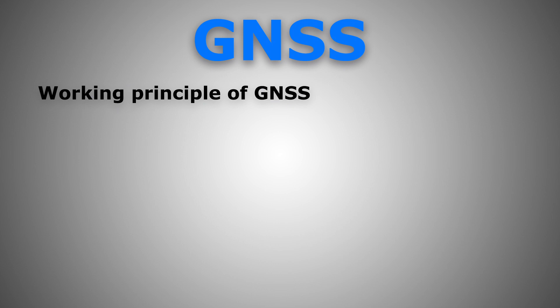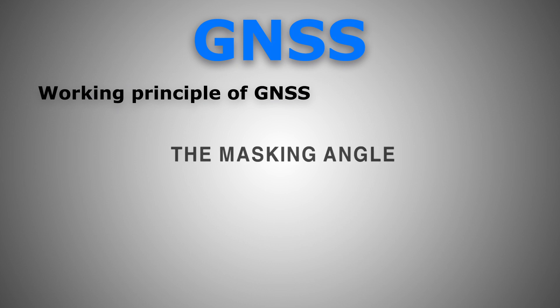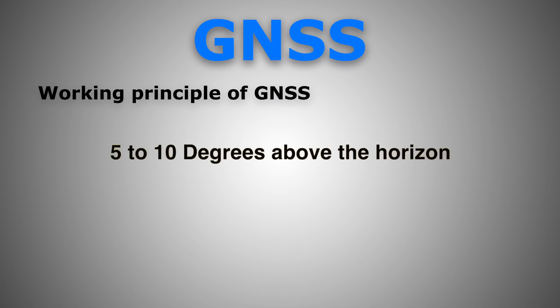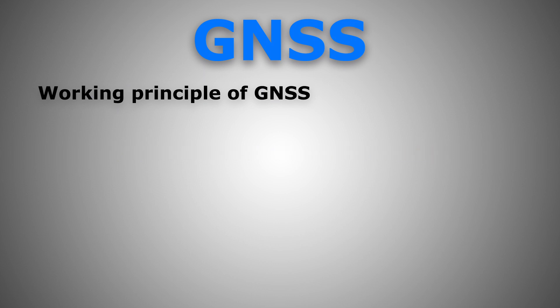One more thing to know is the masking angle. For an SV to be included in the trilateration calculation, it must be at least 5 to 10 degrees above the horizon as a minimum. This threshold is known as the masking angle.